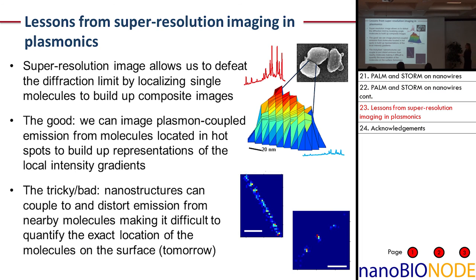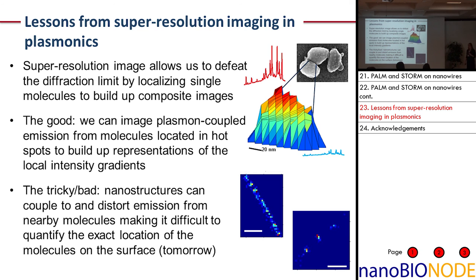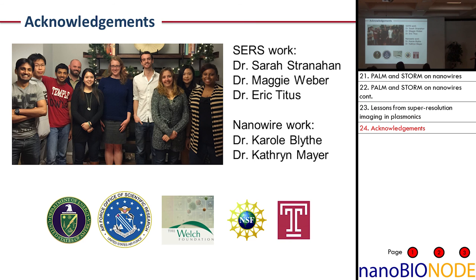In conclusion, I've shown a little bit about super-resolution imaging and how it allows us to defeat the diffraction limit of light by localizing single molecules using photo-switchable molecules to build up a composite image. We have great examples of plasmon-coupled emission from molecules located in hot spots. But we also have some complications: as our molecules interact with plasmonic nanostructures, we can have significant distortion in where the emission is localized. Unlike in traditional biological experiments where things reconstruct accurately, we get interesting reconstructed images that don't reflect the true structure of the underlying substrate. Tomorrow I'll talk about a few examples of this in greater detail. Thank you.